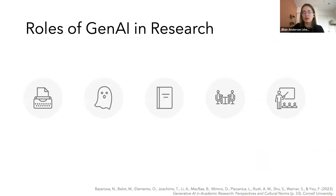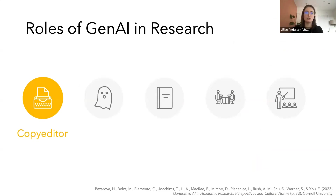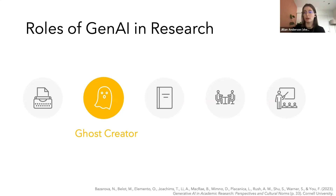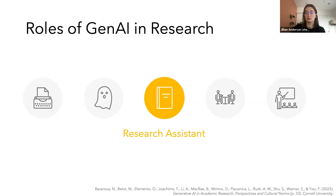I've identified five different roles. The first is the role of a copy editor — using generative AI to review documents, evaluate tone or style, or pick out errors. Autocorrect tools like Grammarly already use generative AI in the background. You can also think about it as a ghost creator — this is the role that gets talked about the most in media outlets. It gives the most license to generative AI to just create something, and there are a lot of risks associated with that role.